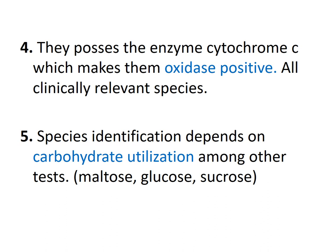Some species like Neisseria gonorrhoeae will ferment glucose only, while Neisseria meningitidis will ferment both maltose and glucose. You can set up in the lab different test tubes with different sugars, introduce your unknown species, and based on the carbohydrate utilization pattern, identify which species of Neisseria you are dealing with.